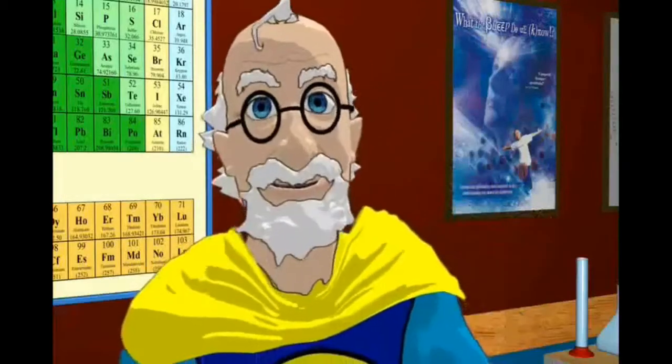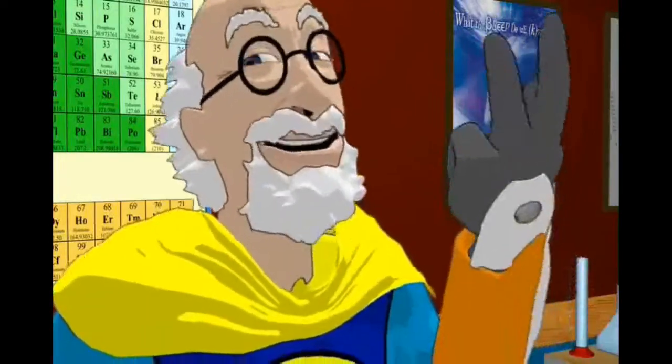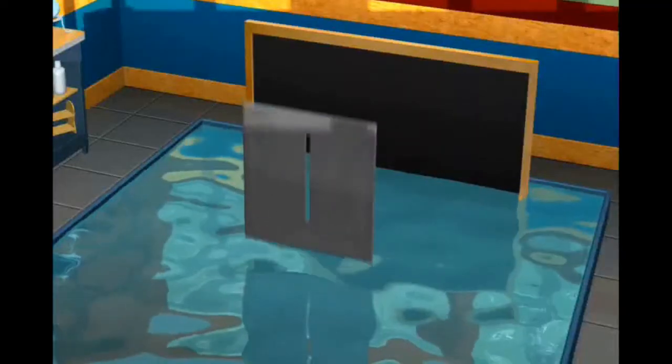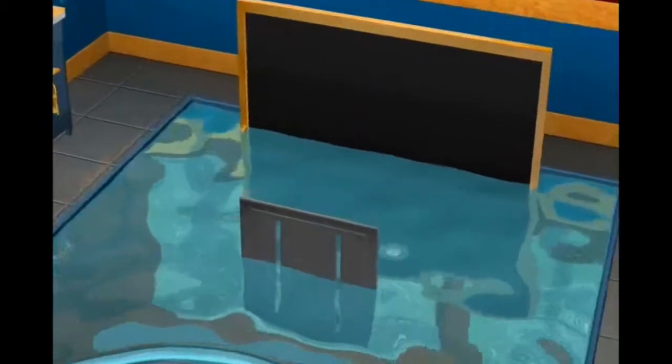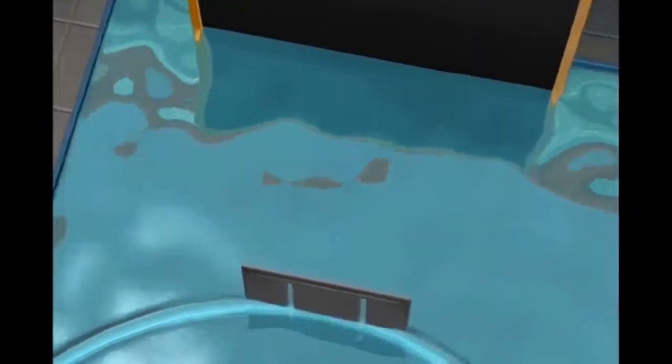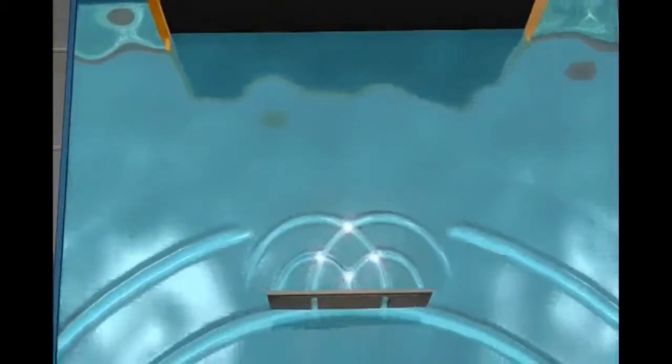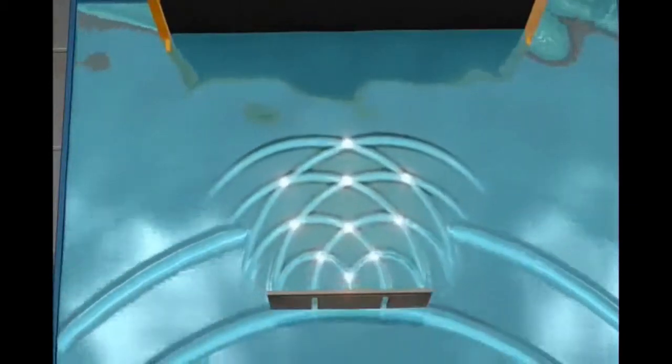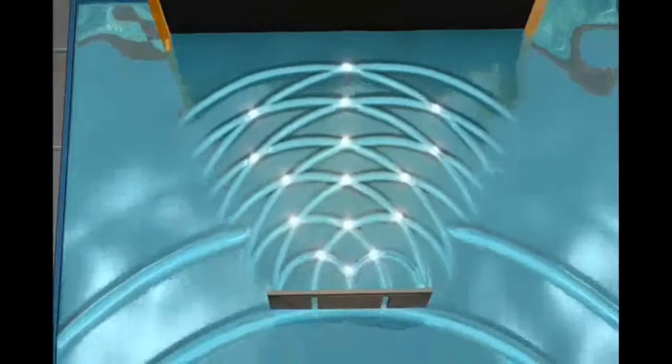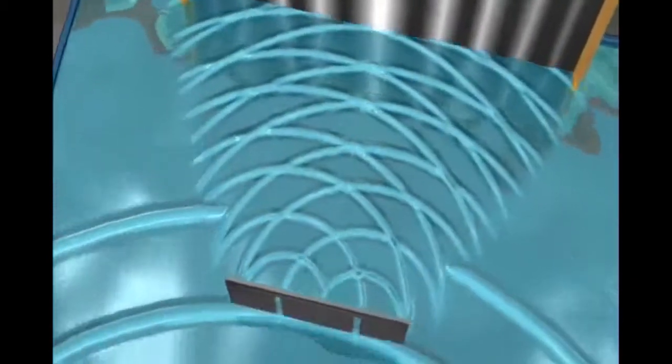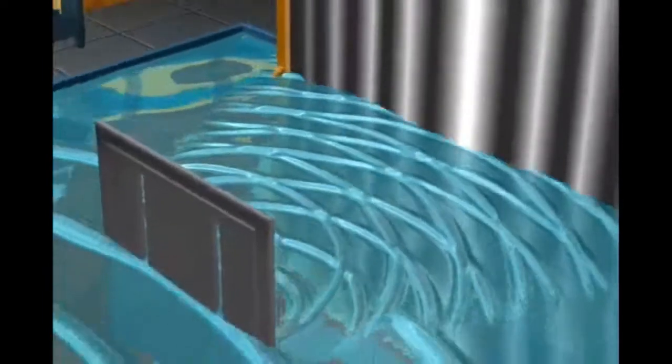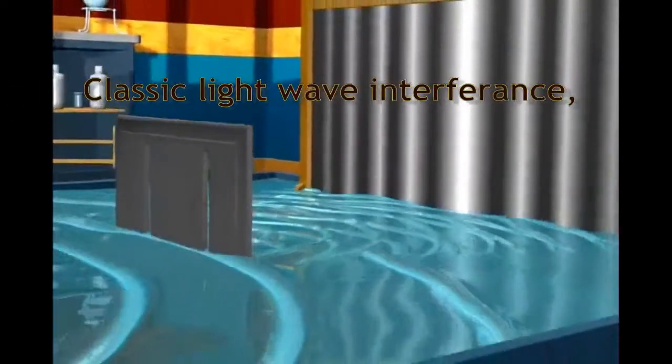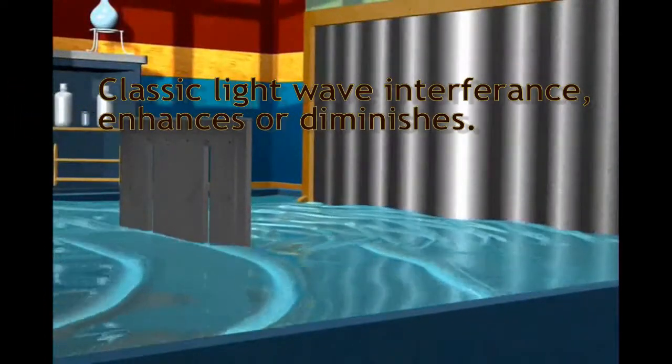But, when we add the second slit, something different happens. If the top of one wave meets the bottom of another wave, they cancel each other out. So now, there is an interference pattern on the back wall. Places where the two tops meet are the highest intensity, the bright lines, and where they cancel, there is nothing.